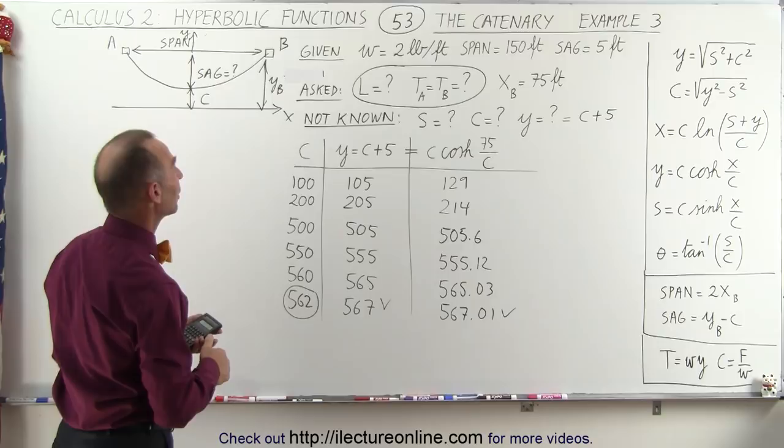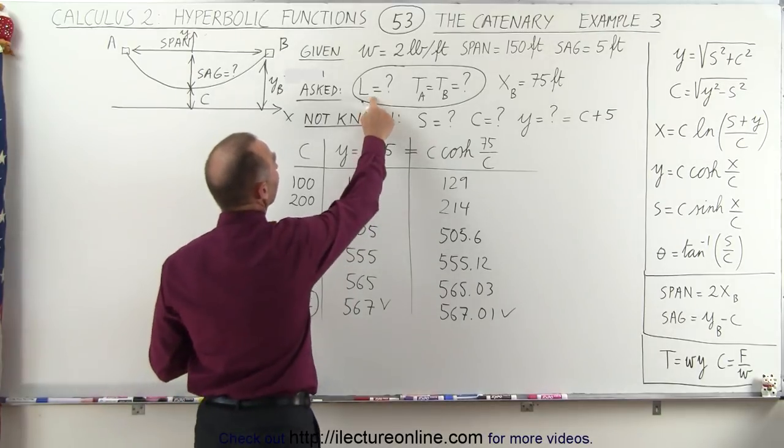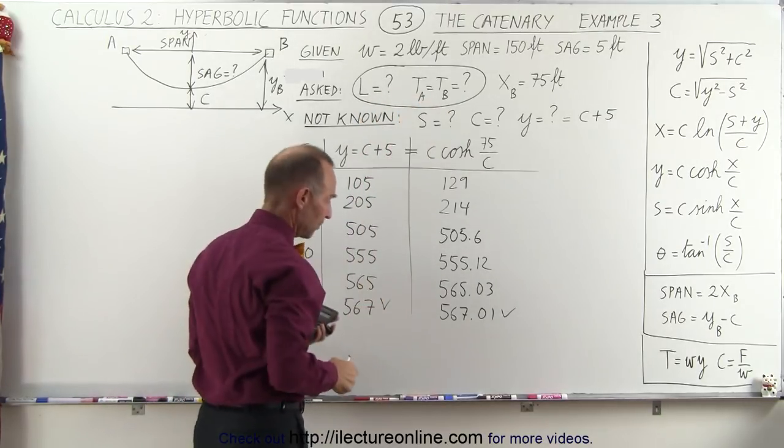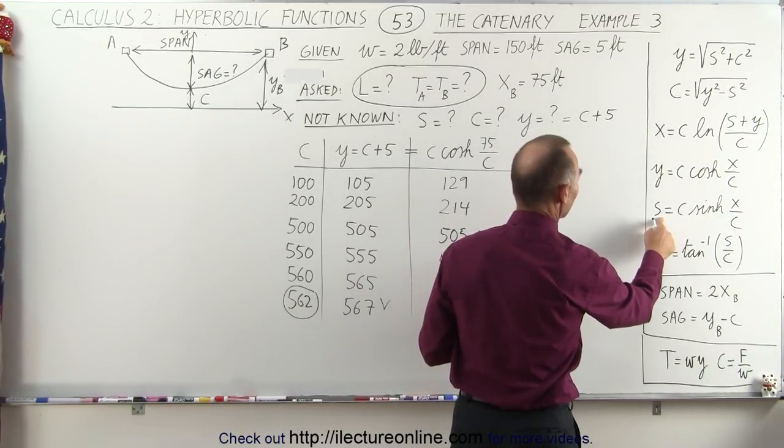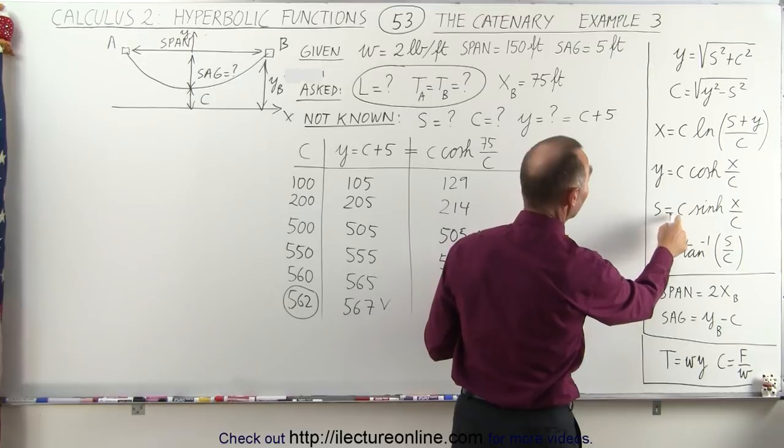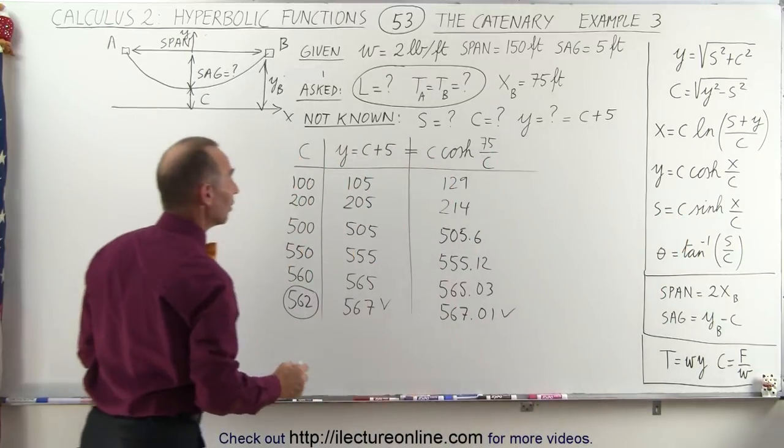And now what we can do is we're now looking for L and we're looking for T_a and T_b. To find L, we need to find s. Because after all, s is twice L, or L is twice s, I should say. So let's go ahead and use this.